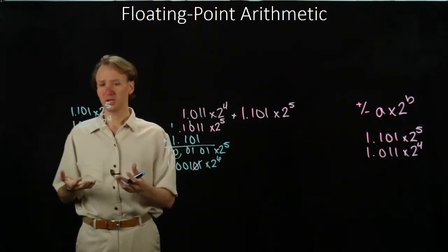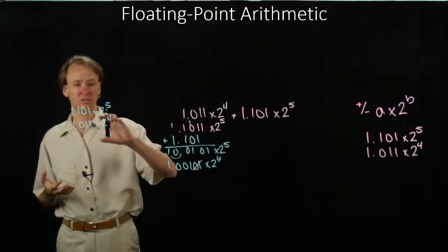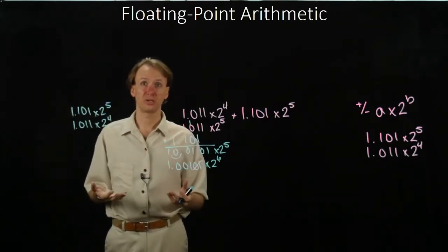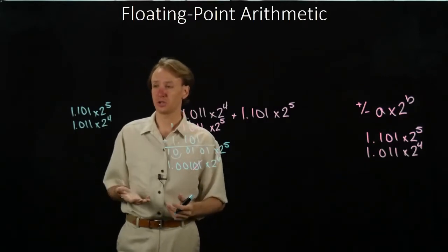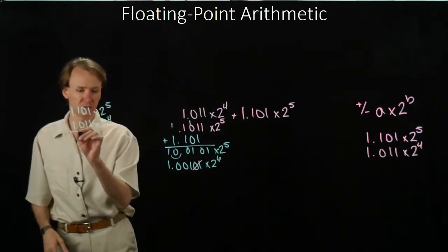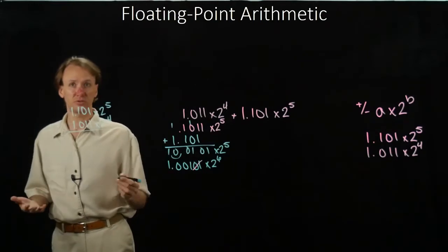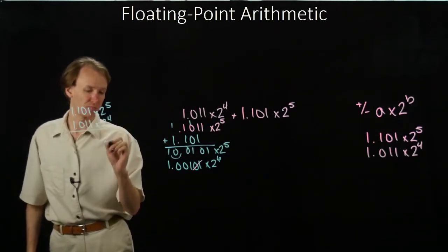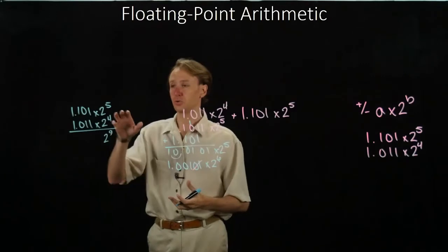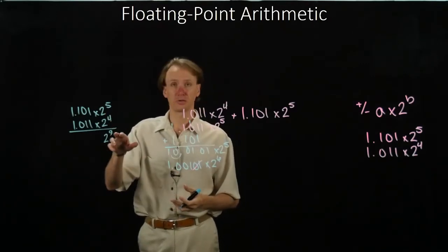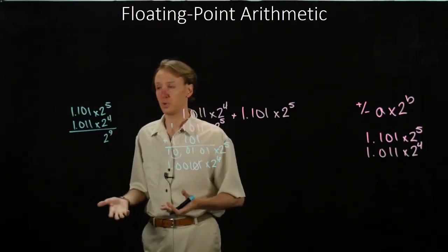To do the multiplication here, I can start with the exponent. The exponent is really easy. I can just use laws of exponents to tell me that 2 to the fourth times 2 to the fifth is 2 to the ninth. I just add the two exponents together, and that goes in as the new exponent.